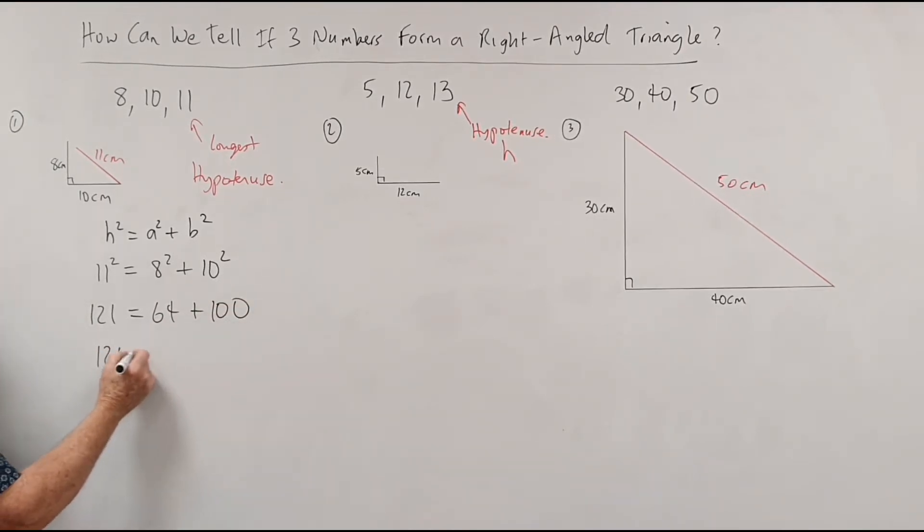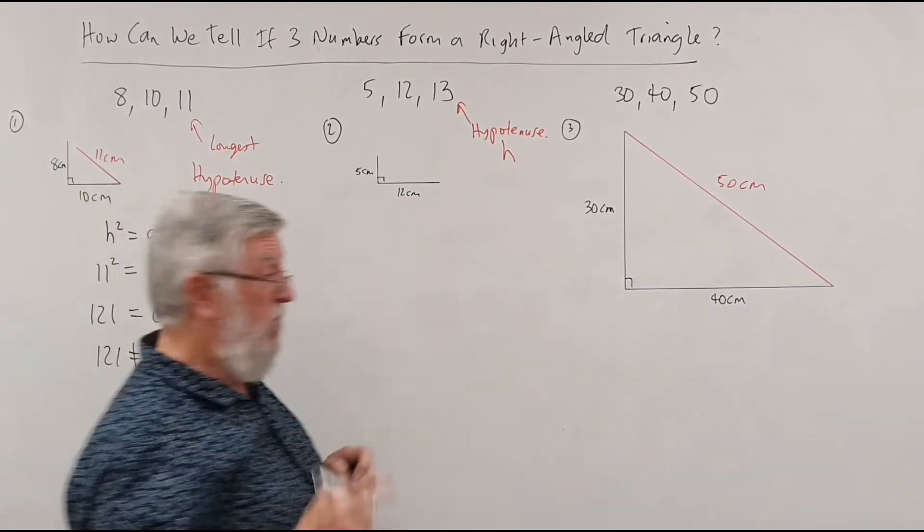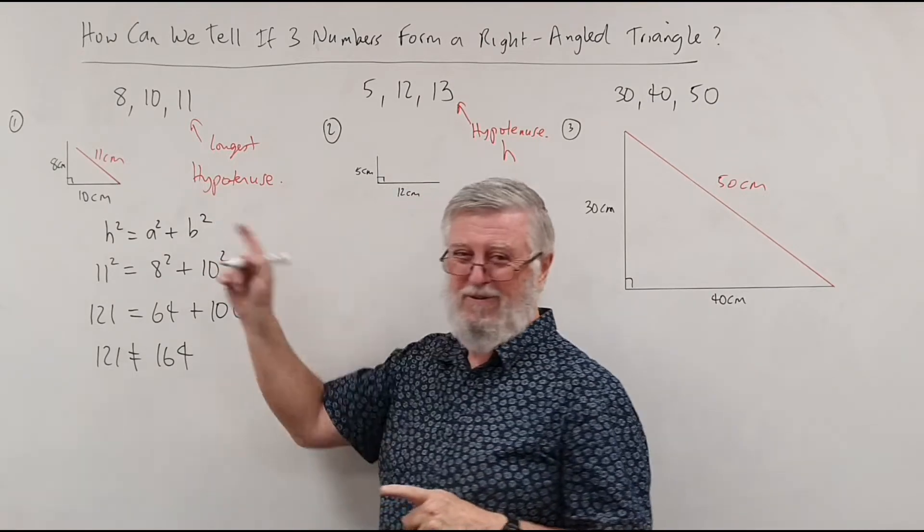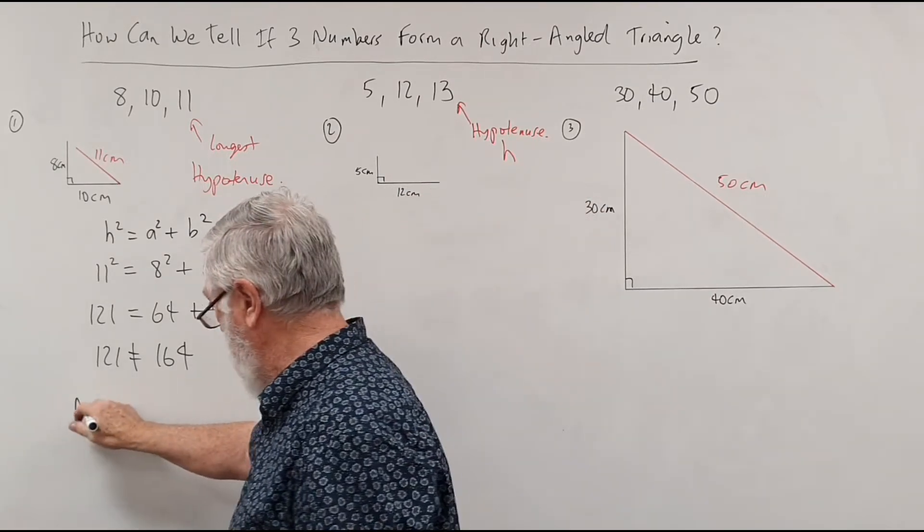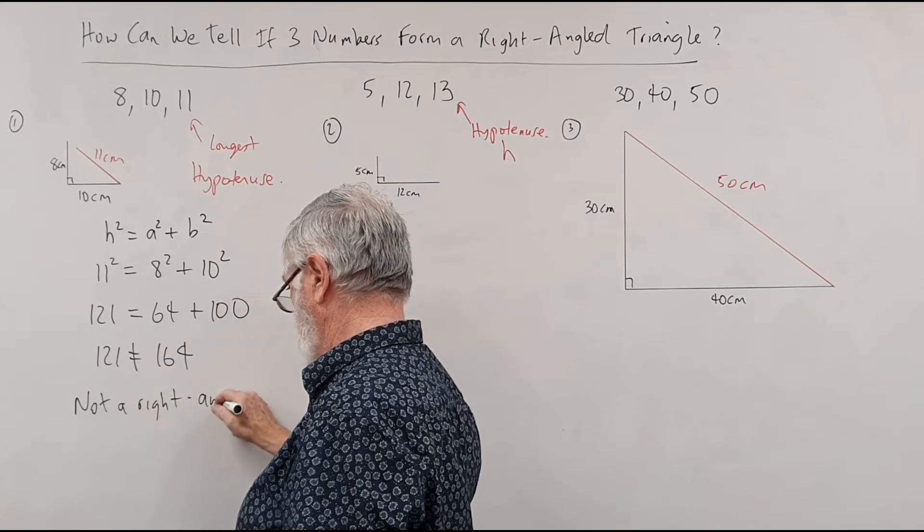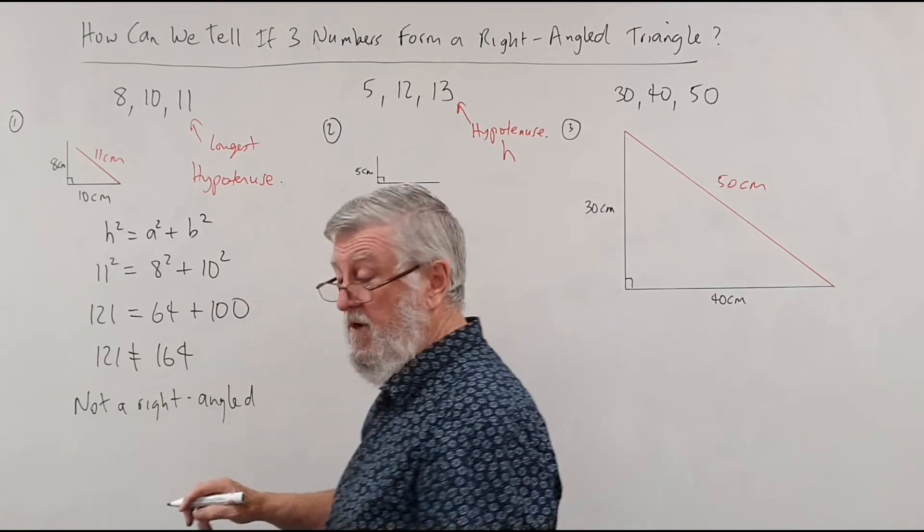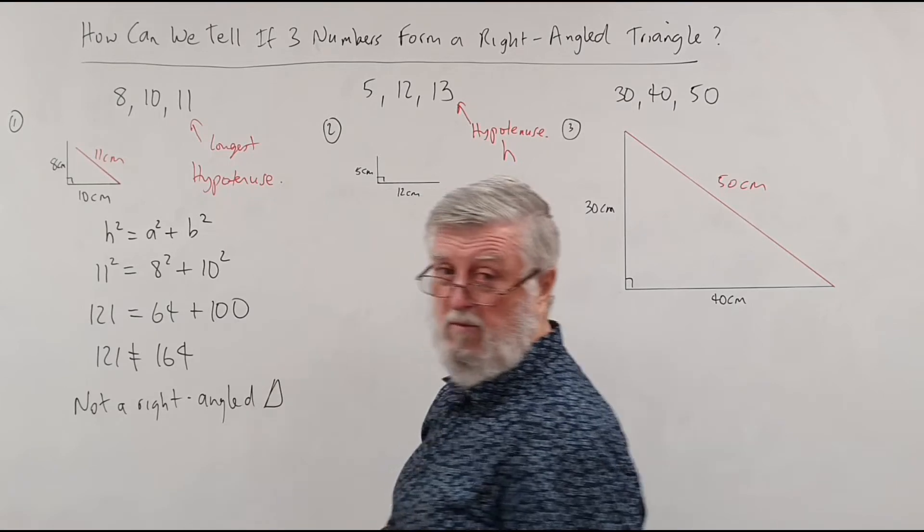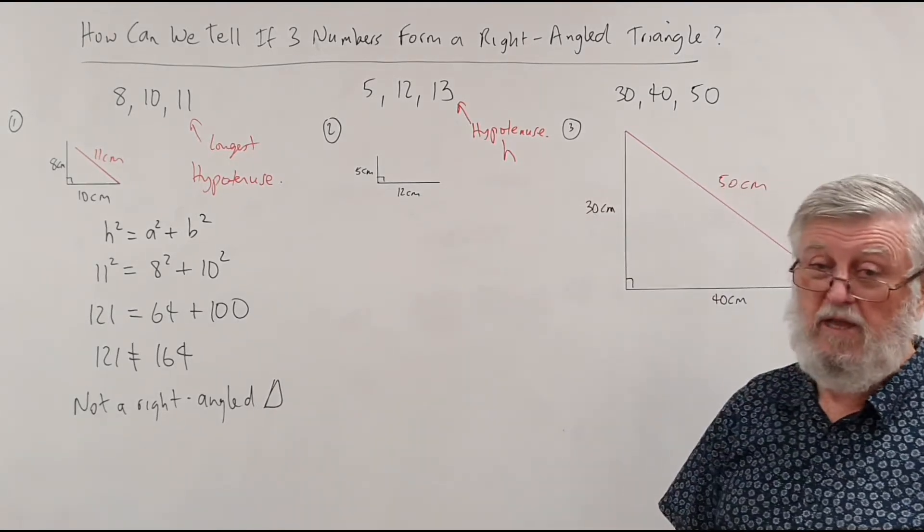And then you look at it and you go, there's 121 equal 164, and we talk about the math that they don't equal each other. What does that tell us? Without drawing the diagram, it tells us that it is not a right angle. And I can abbreviate this and just go triangle, and it's acceptable right triangle, not a right angle triangle.